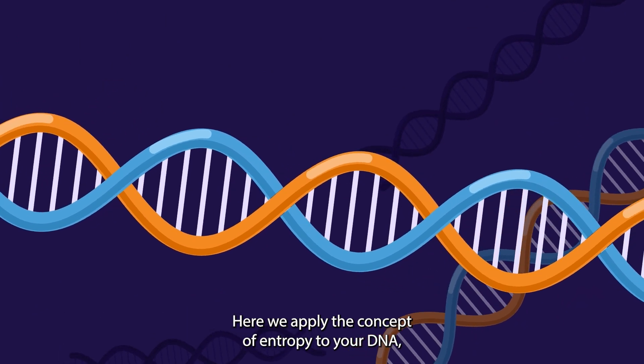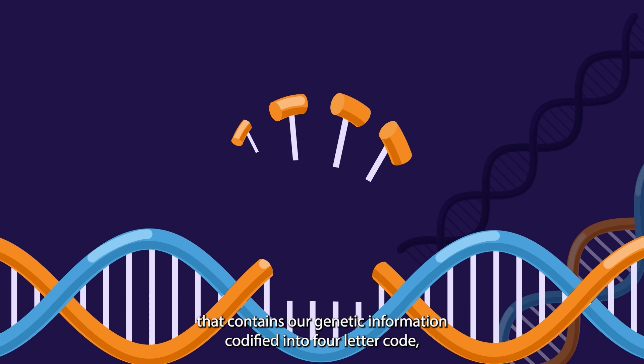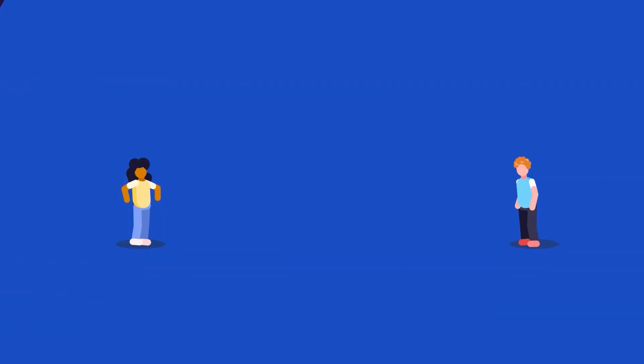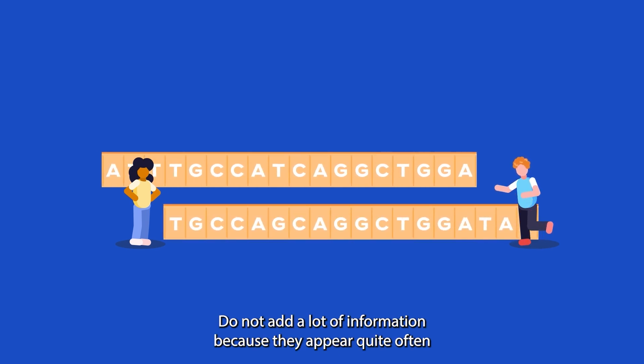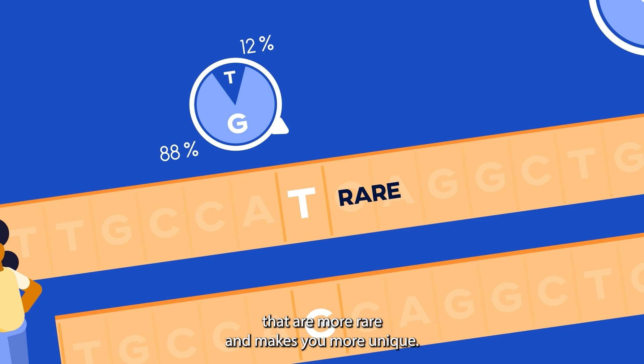Here we apply the concept of entropy to your DNA. A sequence that is basically a message that contains our genetic information codified into a four-letter code, and we can use the entropy formula to estimate what parts of the code do not add a lot of information because they appear quite often in any given population, and also those parts that are more rare and make you more unique.